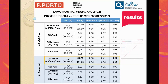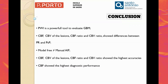In terms of diagnostic performance, CBV, CBF, and all these metrics show a high area under the curve. The CBF of the lesion achieved the highest area under the curve with an accuracy of 95%. CBF and CBV of the lesions and their ratios show significant differences between progression and pseudo-progression. While CBV is the most commonly used metric, cerebral blood flow also shows great potential in glioblastoma evaluation. Thank you very much.